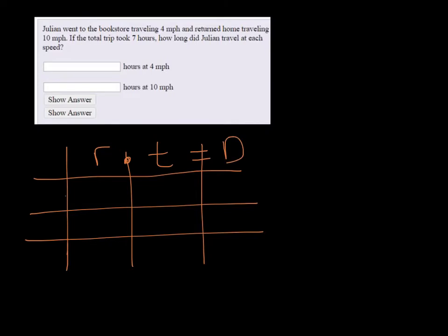Alright, so there's the trip to and then the return is what we're comparing. So he was traveling to the bookstore four miles per hour and his return is ten miles per hour. The total trip took seven hours, so that's total time. Call this total. And we don't know anything about his distance, but we do know that the distance to and from would be the same. So I'm just going to write same here.